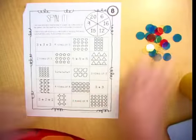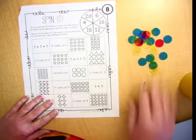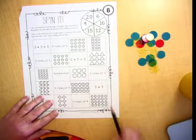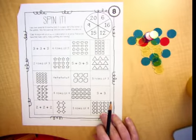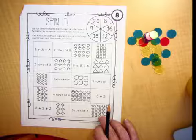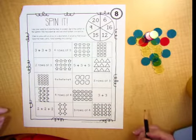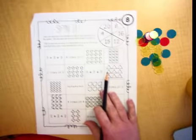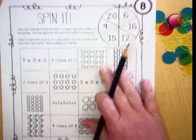Now it might help if you have some little counters of some sort, some of the ones we sent home or anything that you can line up and build an array with. You could use cereal or whatever you have. But we're going to look at this together. I'm going to show you how to do it.